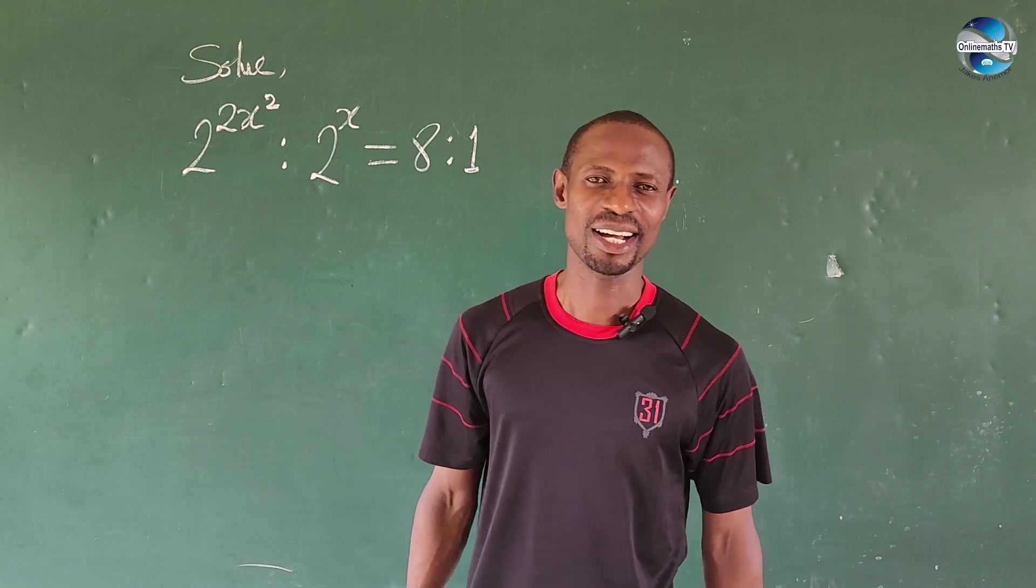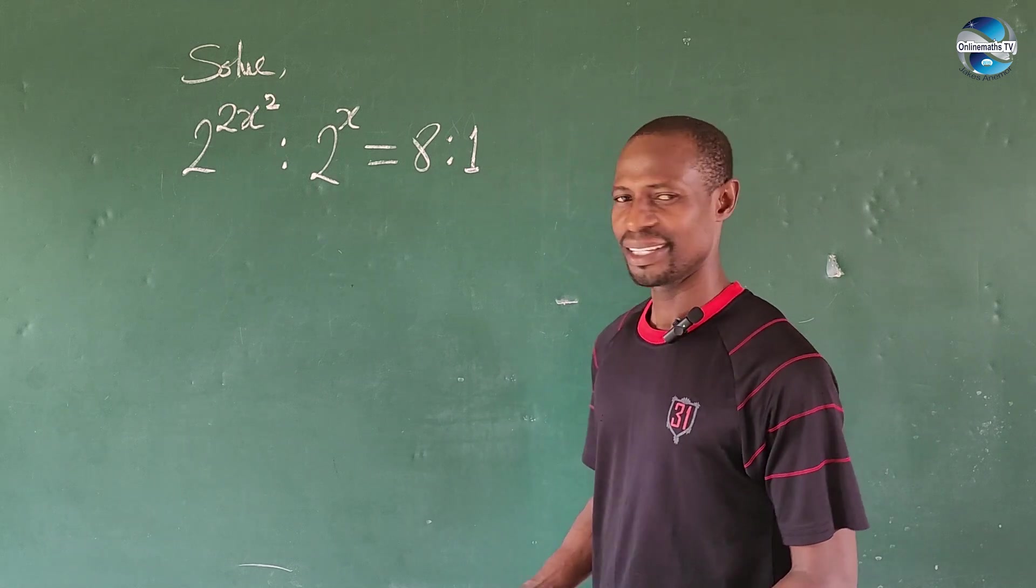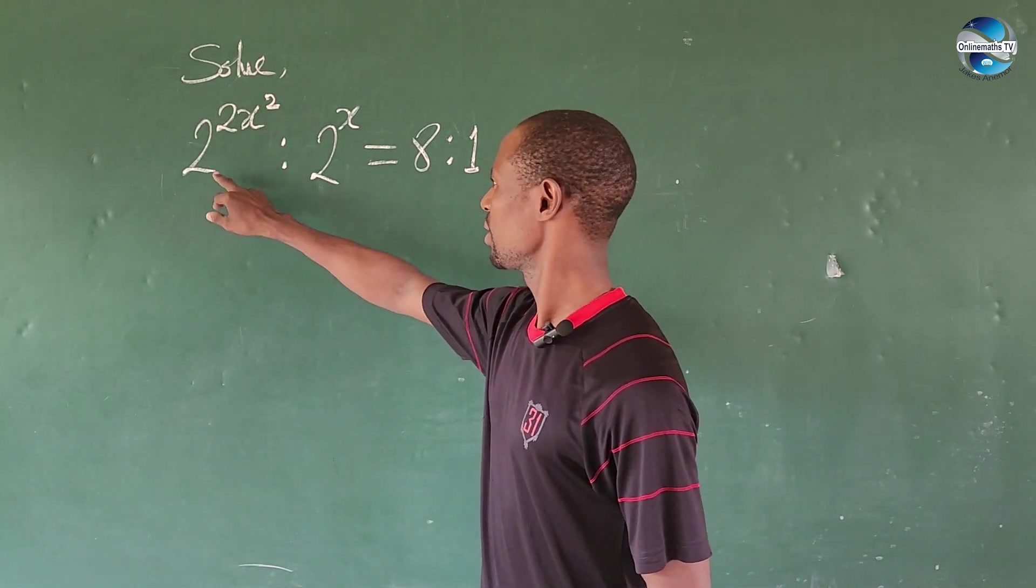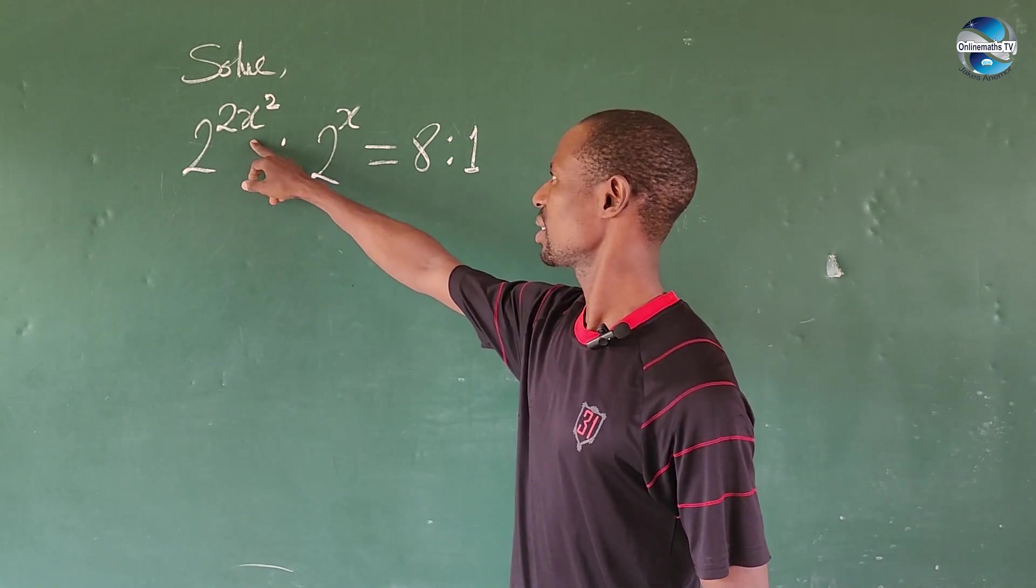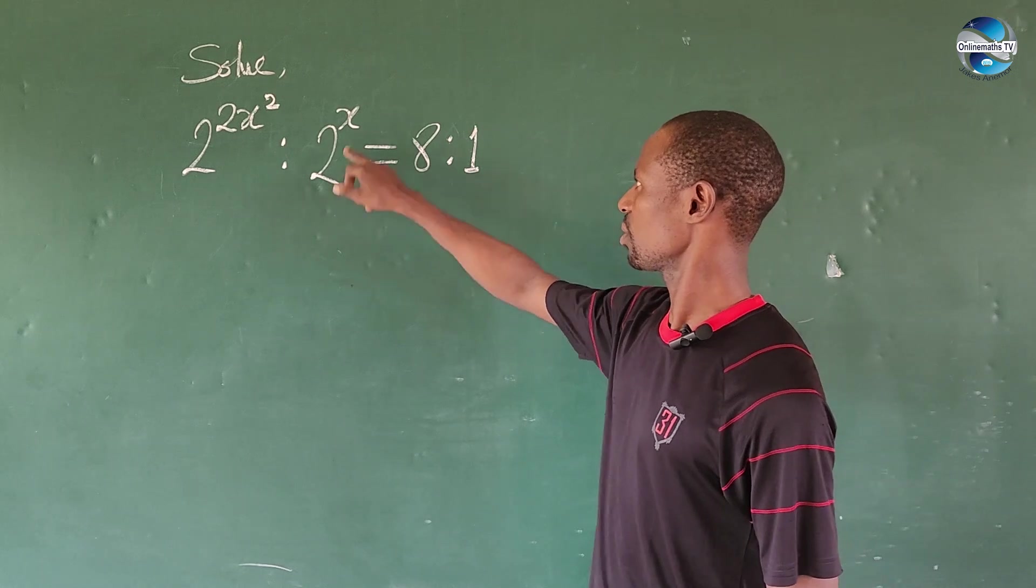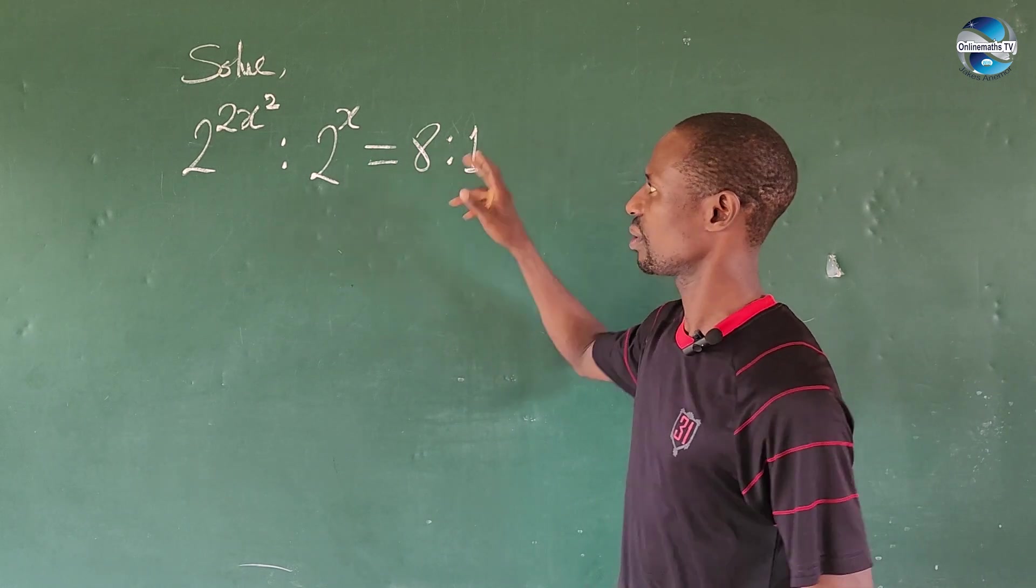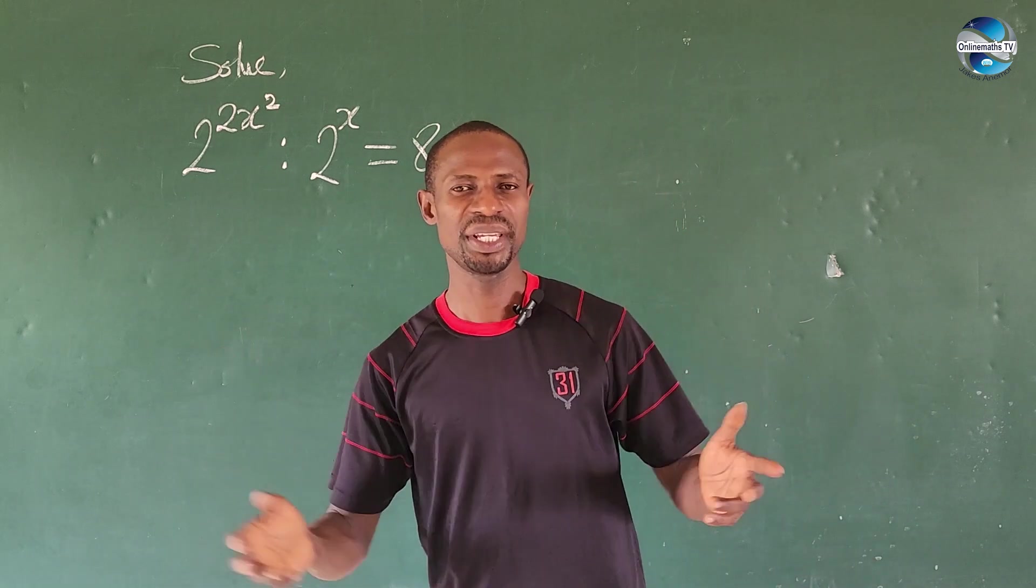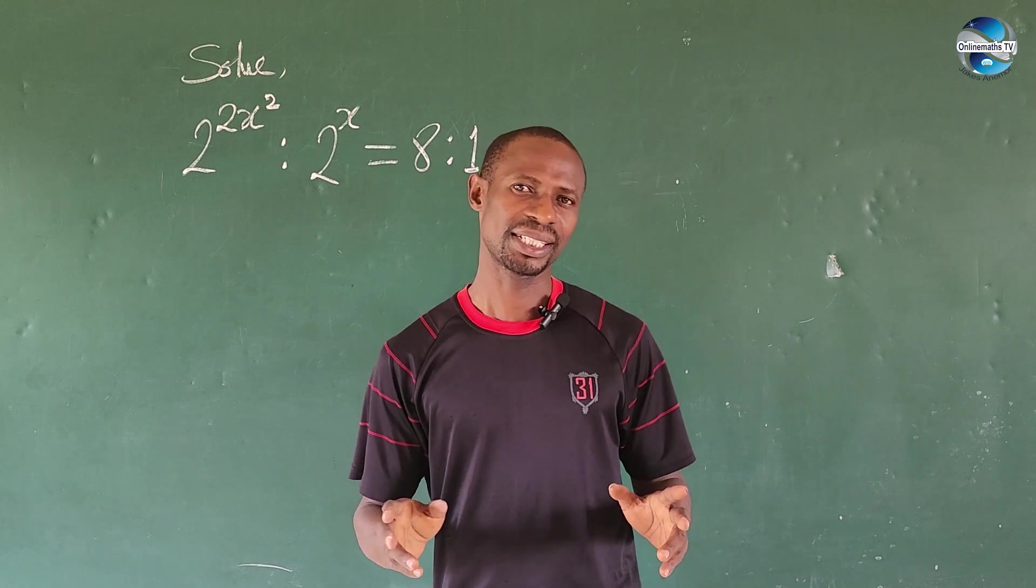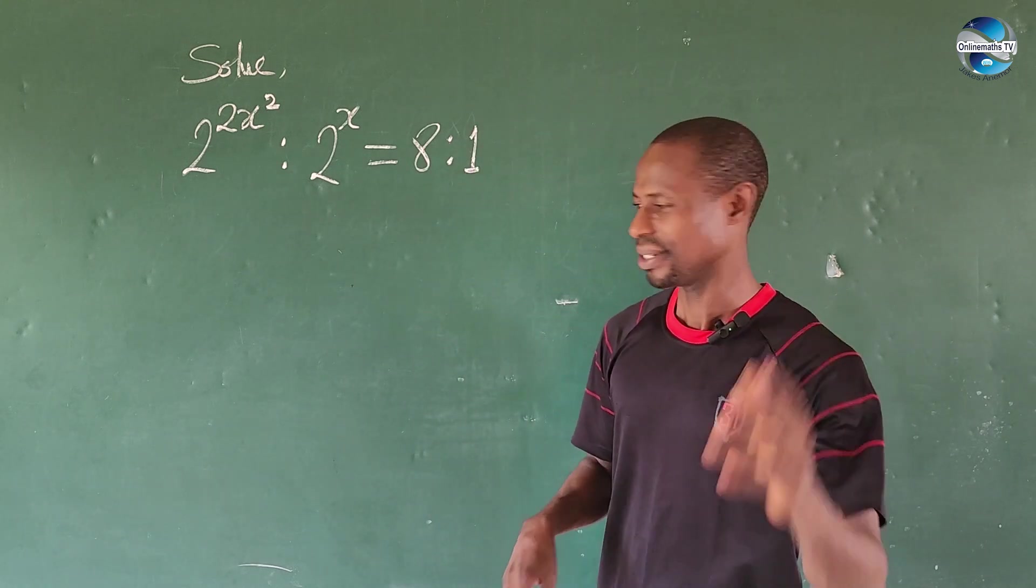Welcome to another class. Today we have this simple challenge in ratio format. The question says: solve 2^(2x²) : 2^x = 8:1. What will be the value or values of x that satisfy this equation?